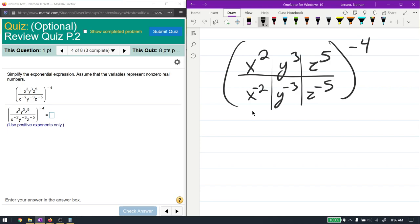We have x to the 2 over x to the negative 2, like bases that are dividing, so 2 minus negative 2 becomes x to the 4th. y to the 3 over y to the negative 3 is y to the 3 minus negative 3, so y to the 6th. And then z to the 5 minus negative 5 is z to the 10th. And all this is to the power of negative 4.